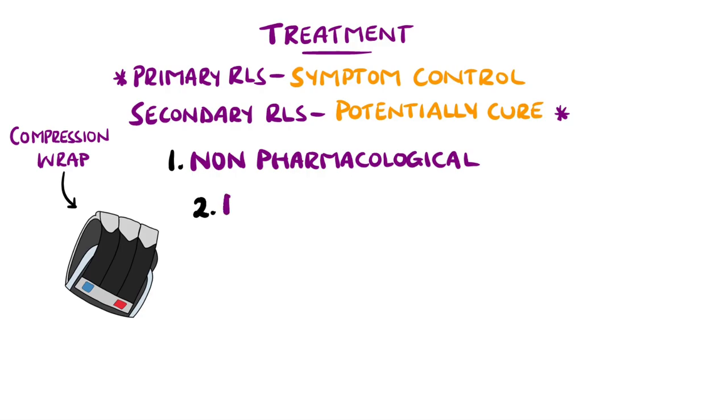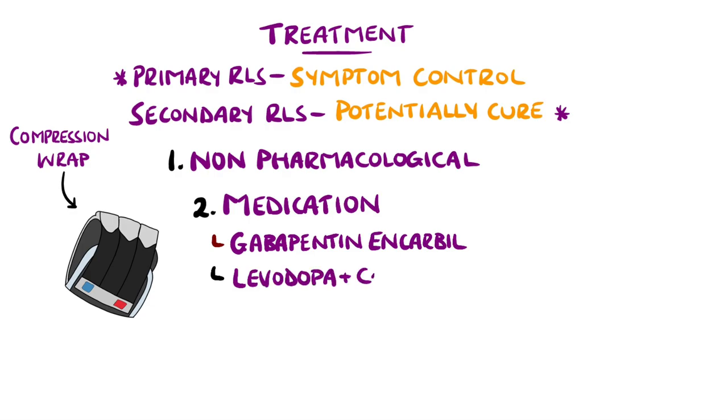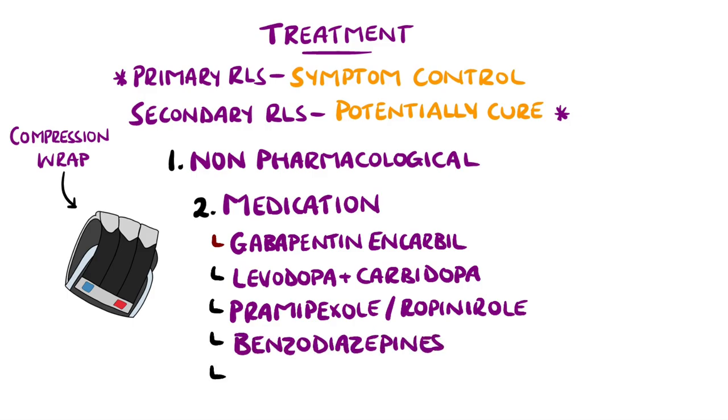First-line medication is usually a longer-release gabapentin, such as gabapentin enacarbil, and in some cases using levodopa and carbidopa, which are a combination of a dopamine precursor and decarboxylase inhibitor used to inhibit the breakdown of levodopa. Dopamine agonists like pramipexole or ropinirole are other options. Benzodiazepines or low-potency opioids might also be considered.